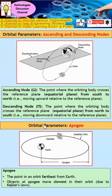The next parameter is apogee. The apogee point is actually the furthest point away from Earth. As you can see, the satellite orbits around the Earth, and the furthest point from the Earth is called the apogee. The object at apogee moves the slowest, because of Kepler's Law.